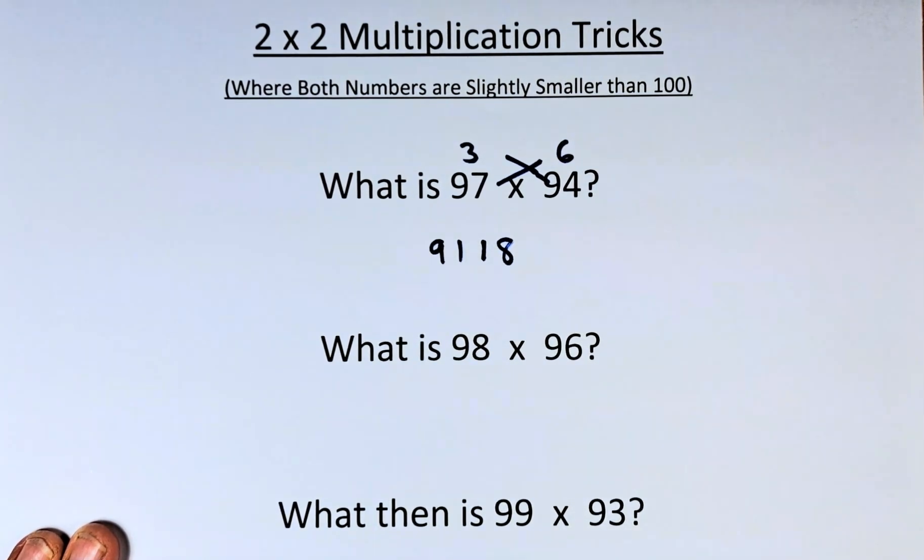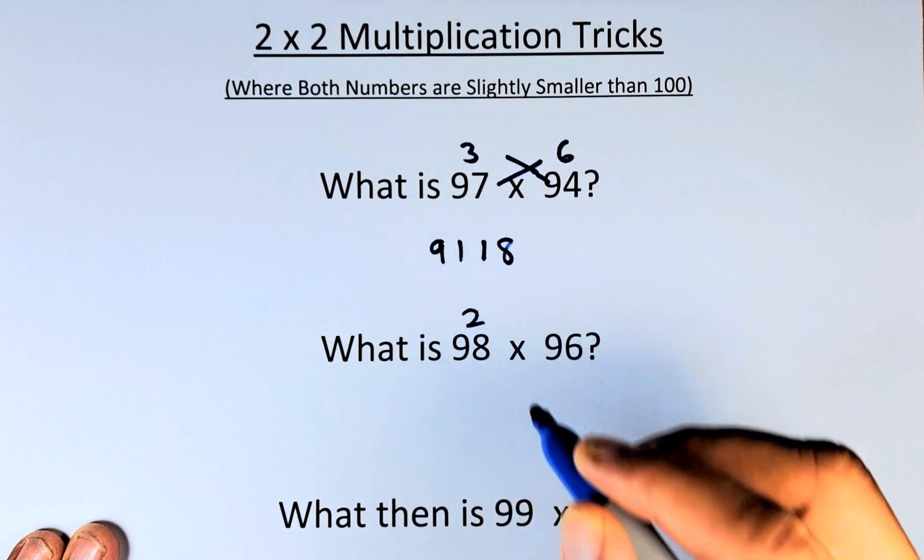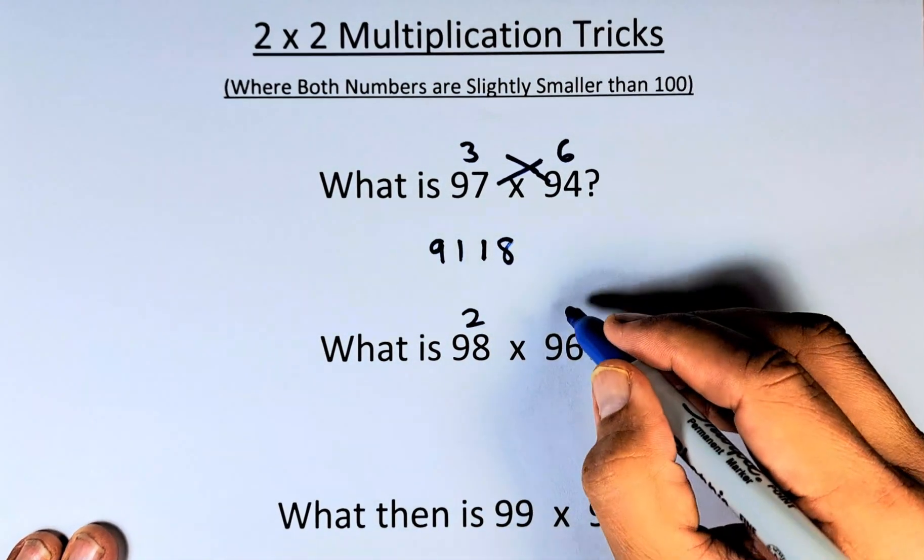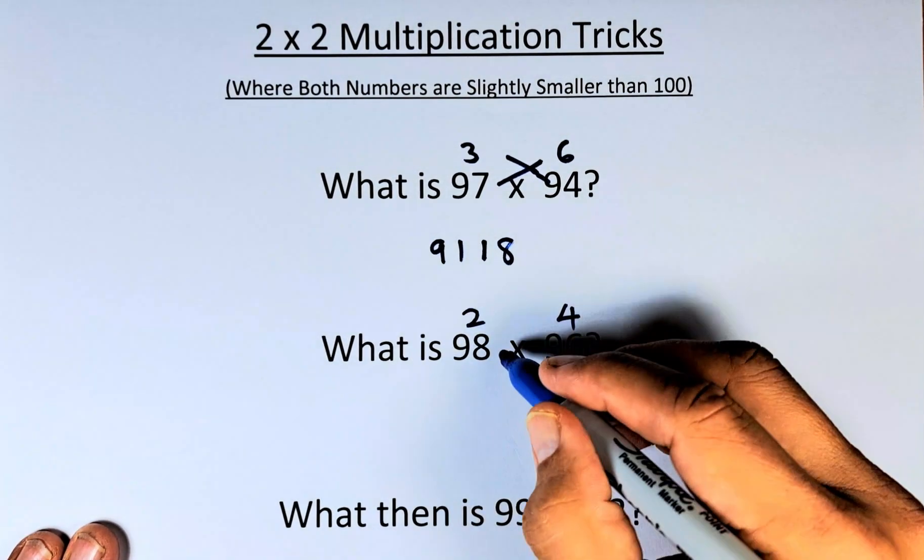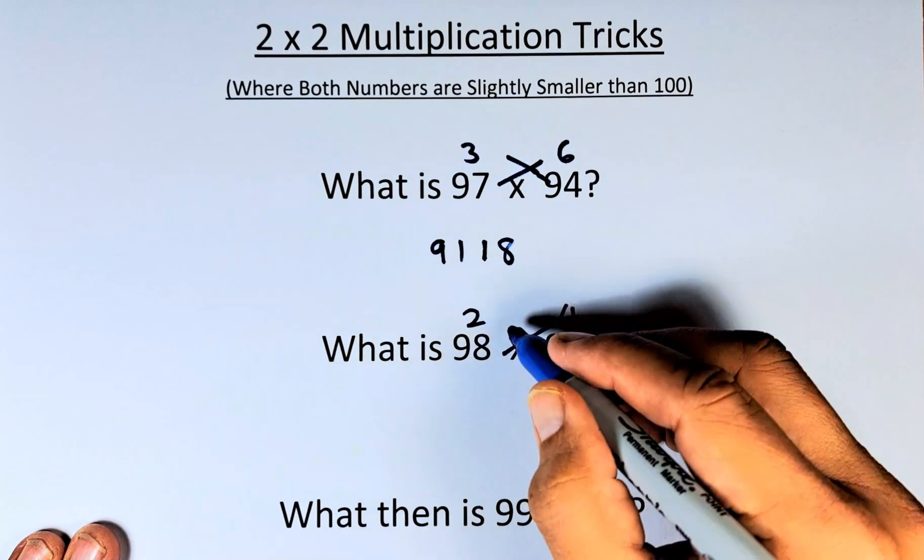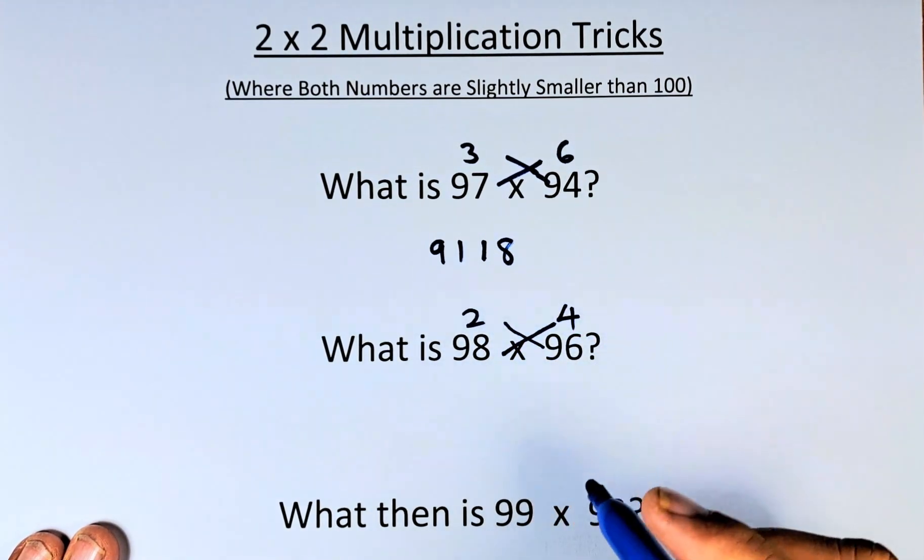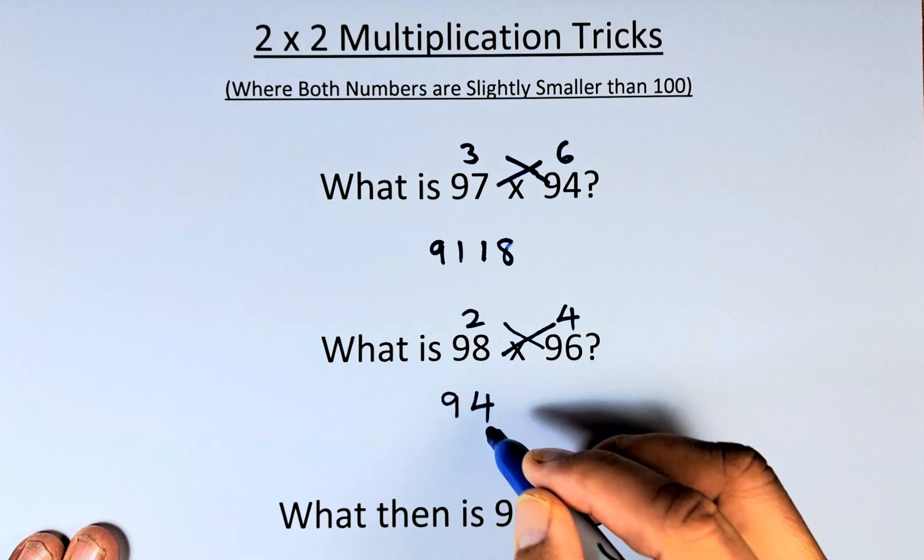Next, what is 98 times 96? Again, the same thing. We add 2 to make 98 into 100, and we add 4 to make 96 into 100. Next step, we take 98 minus 4, or 96 minus 2. They give you the same answer, which is 94.